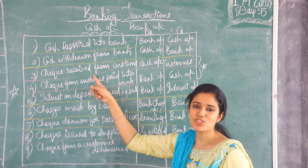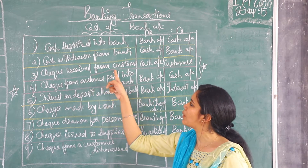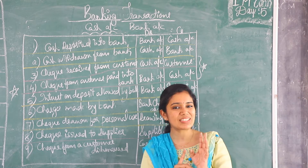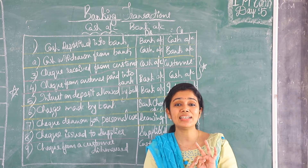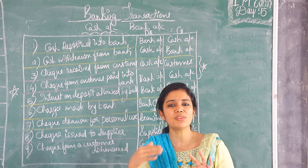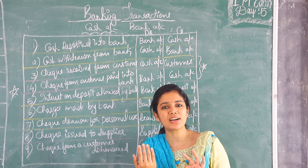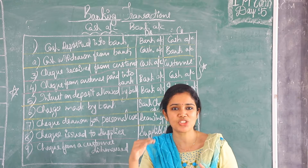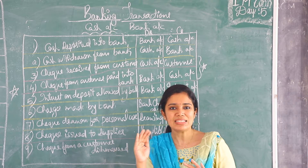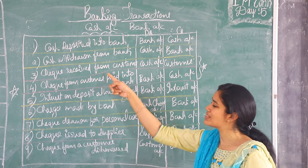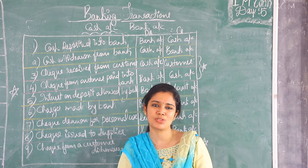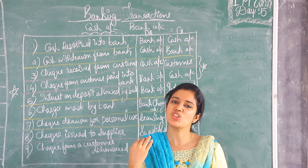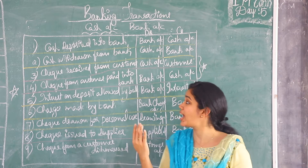The third transaction is check received from a customer. There are two things: one is the check which is received and the other is the customer. Just like the entry when cash is received from a customer — cash account debit to customer — when a check is received, we treat it as cash received. Check received is treated as cash received.